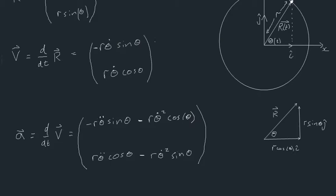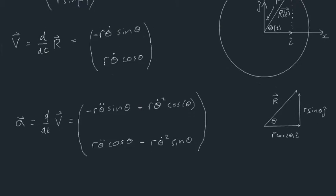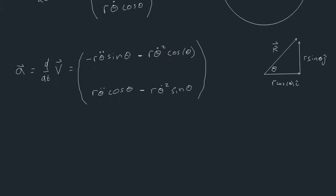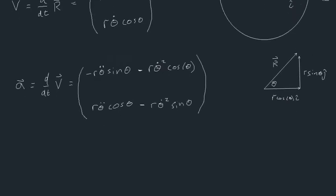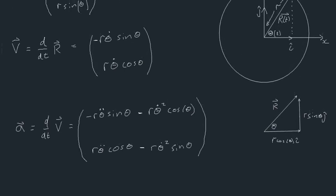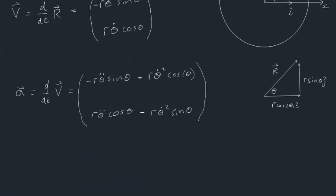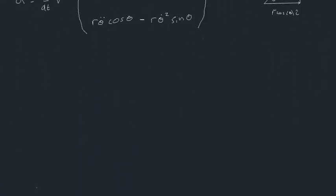The top element is just the derivative of the i-component, and the bottom element is just the derivative of the j-component, using the chain rule. This gives us a complete understanding of acceleration in terms of theta, but it's quite messy with sines and cosines everywhere. Perhaps there's a way to simplify it — and as it turns out, there is: we need to create a new coordinate system.